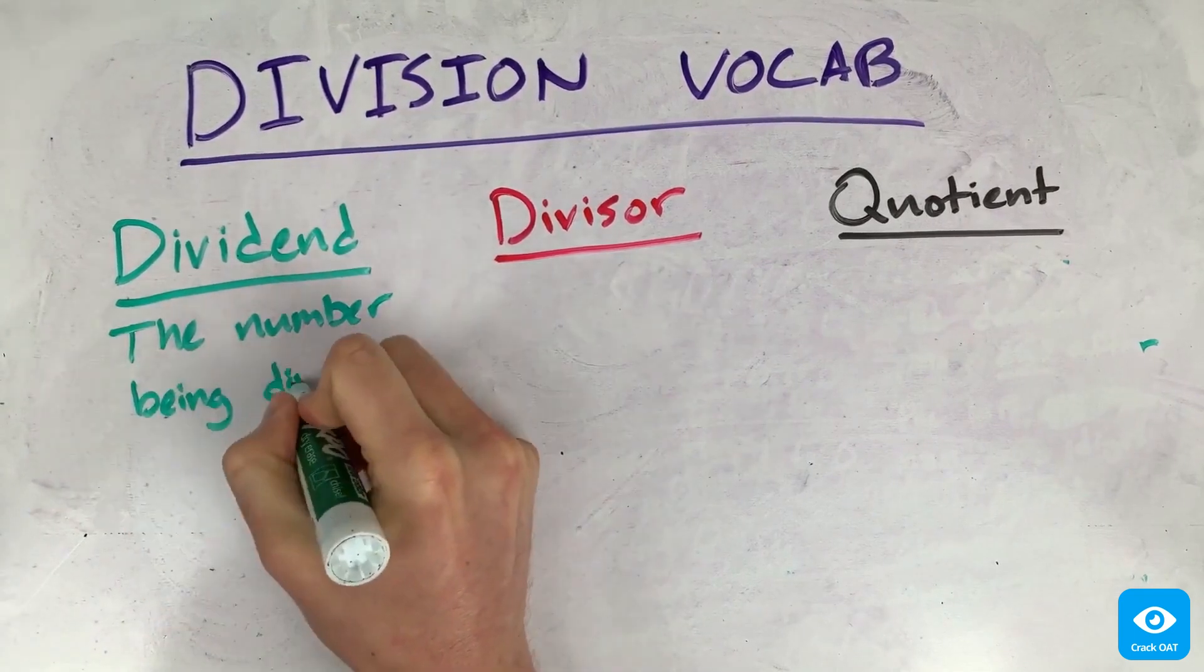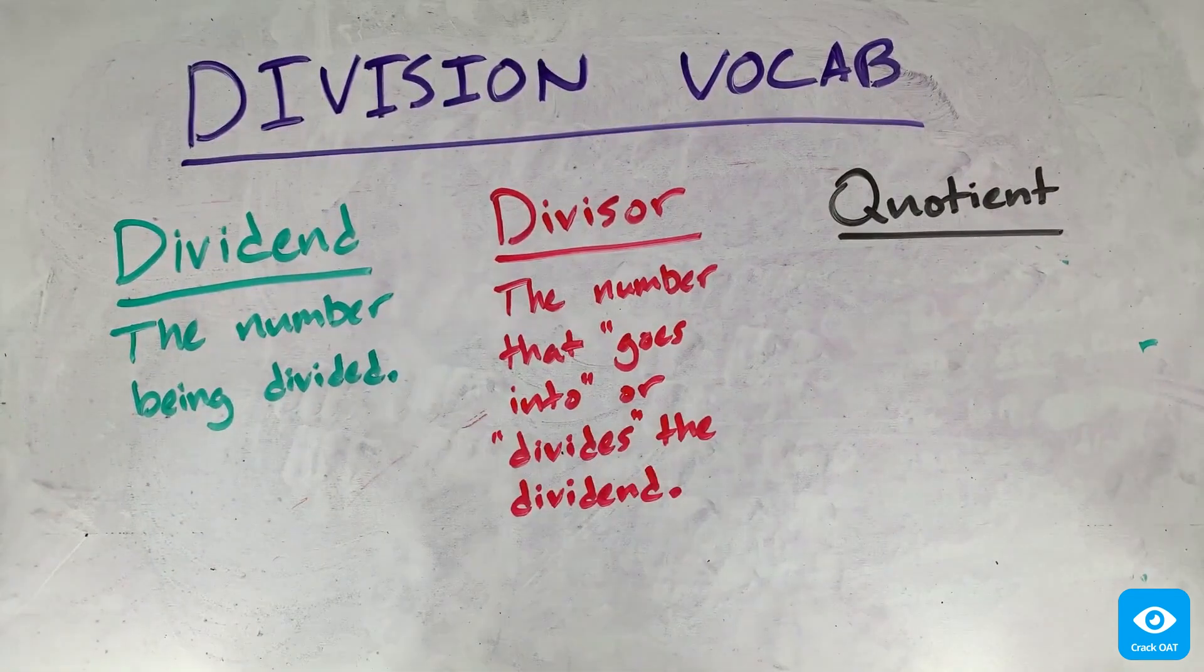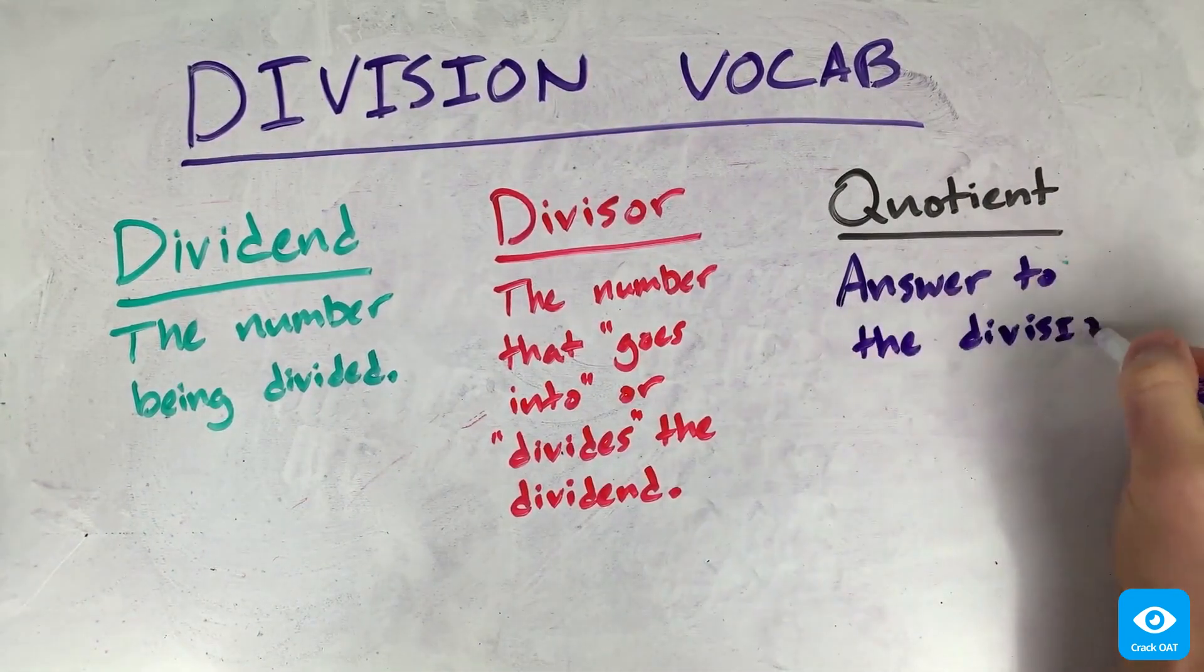The dividend is the number that is being divided. The divisor is the number that goes into the dividend. And the quotient is the answer to the division problem.